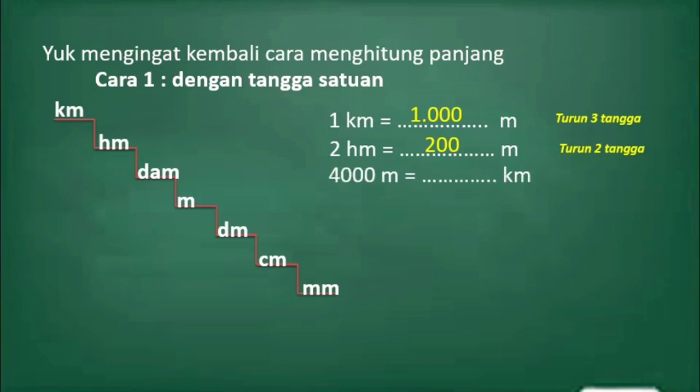Selanjutnya, ada empat ribu meter, nilainya sama dengan berapa kilometer? Dari meter ke kilometer ternyata naik tiga tangga. Itu artinya dibagi dengan seribu. Empat ribu dibagi seribu hasilnya adalah empat kilometer.